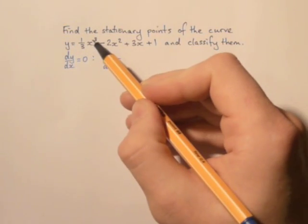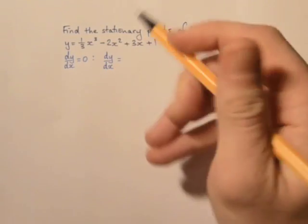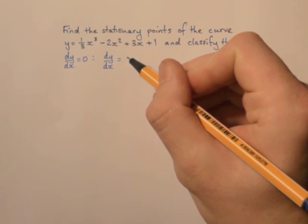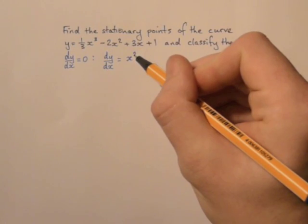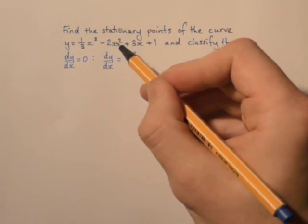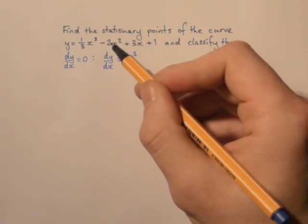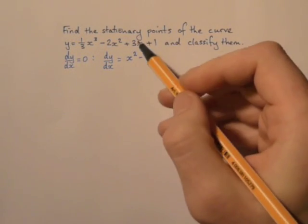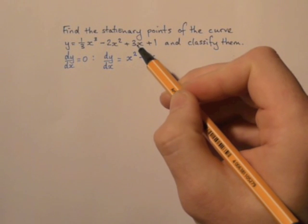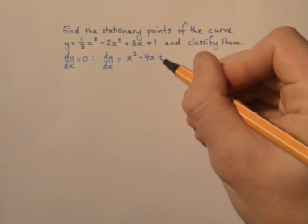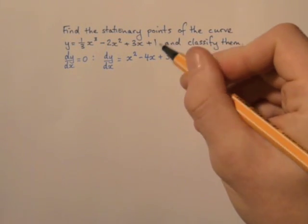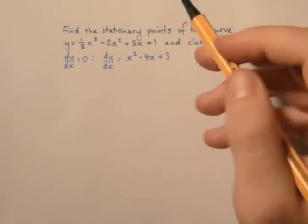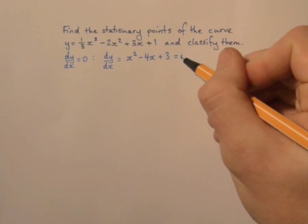So I'm going to get a third times three x squared from the first term, and the third and the three will just multiply to make one. So I'll have x squared. Bringing the two down and multiplying by the two will give me minus four x to the one, which is minus four x. Three x to the one will just become plus three, and the constant will differentiate to zero. So this is my gradient function, and we've said that at the stationary point, that's equal to zero.